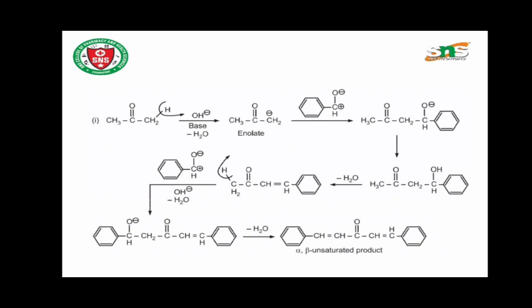In the next step, a proton is added to this intermediate, converting it to the beta-hydroxy intermediate: CH3-CO-CH2-CH(OH)-C6H5.